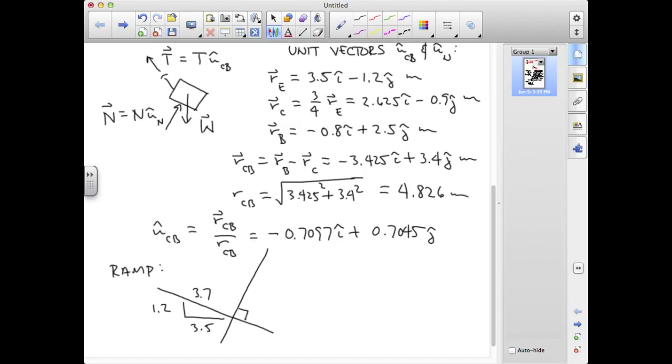So I would have a 1.2 run and a 3.5 rise for the direction of the normal, and that would mean that my unit vector describing the normal orientation is 1.2 over 3.7 in the I direction plus 3.5 over 3.7 in the J direction.